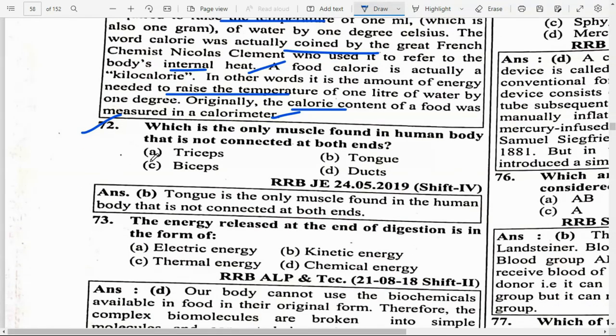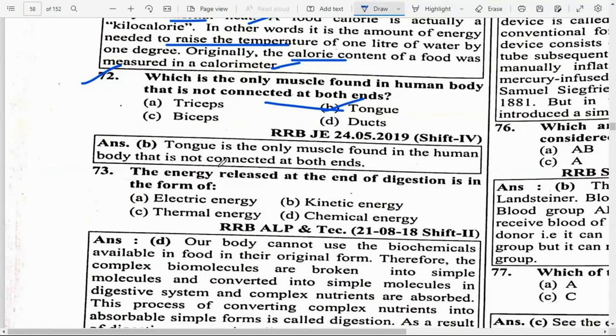Originally, the calorie content of food was measured using a calorimeter. Which is the only muscle found in the human body that is not connected at both ends? Option B — Tongue. The tongue is the only muscle in the human body that is not connected at both ends.